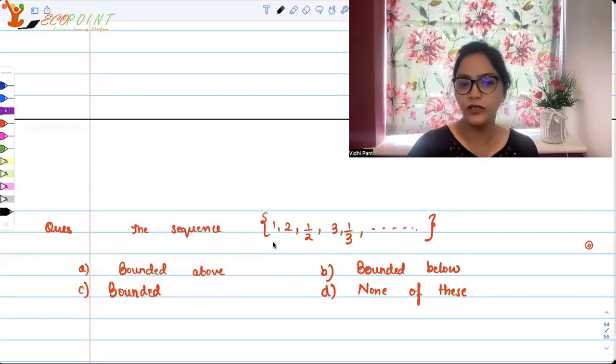What the question is asking you is: is this sequence bounded above, bounded below, bounded or none of these? Now bounded above, bounded below, bounded.